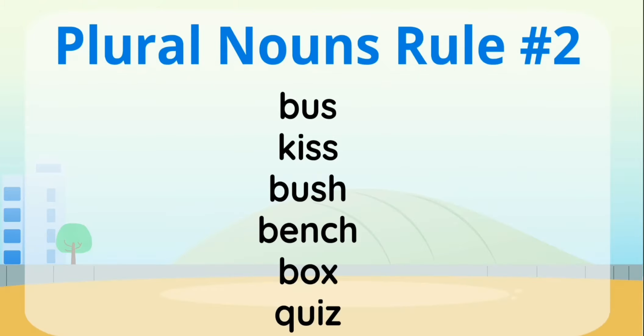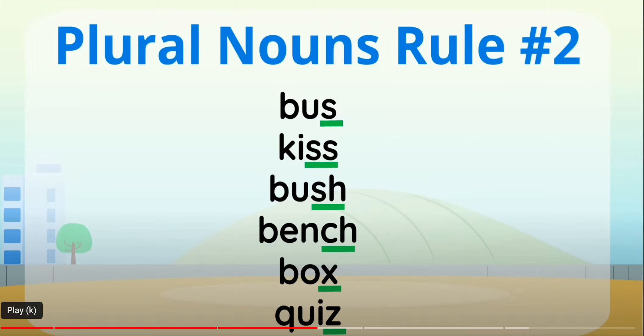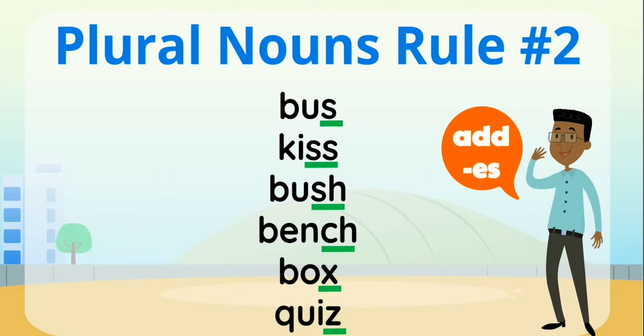Let's make these singular nouns plural then. Bus, kiss, bush, bench, box, quiz. So what letters would we add at the end of this x, ch, x sound? This hissing, it's always going to be an e and an s. Because these words end in the hissing sound, they'll have an es ending to become plural.